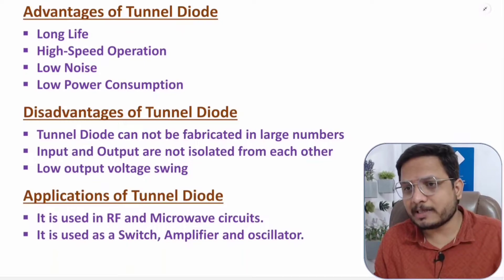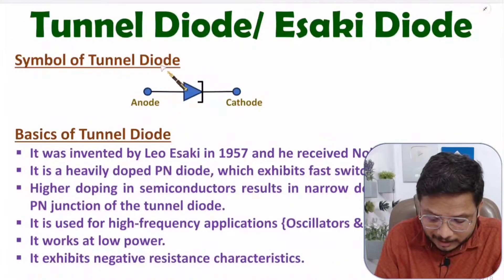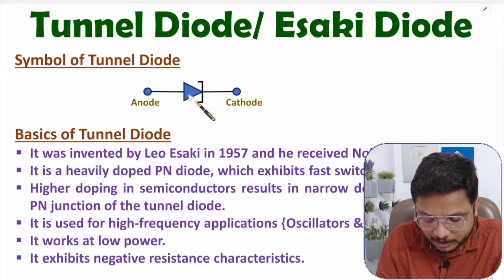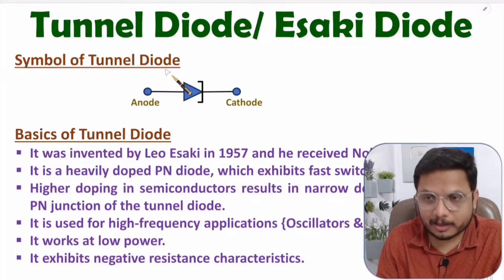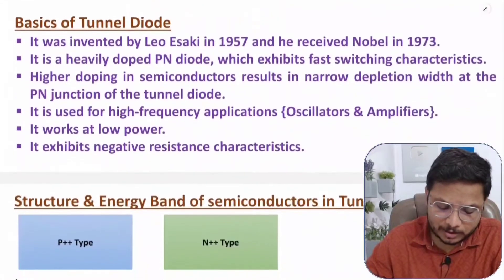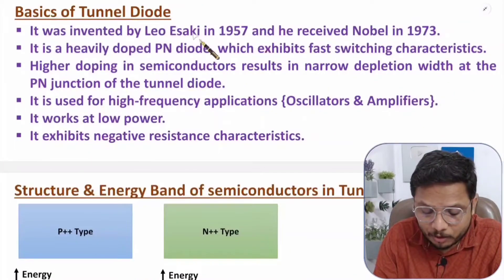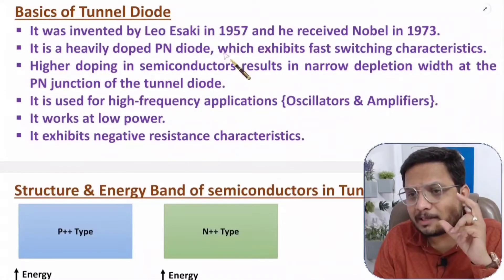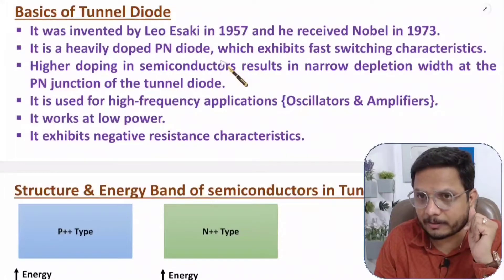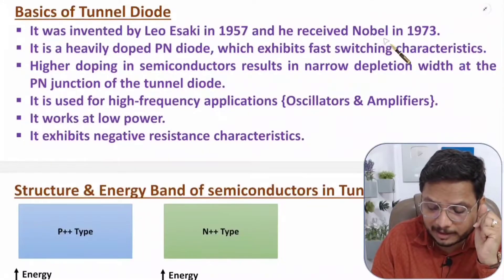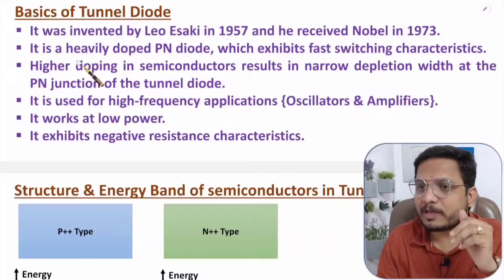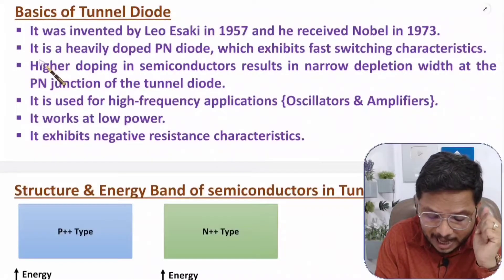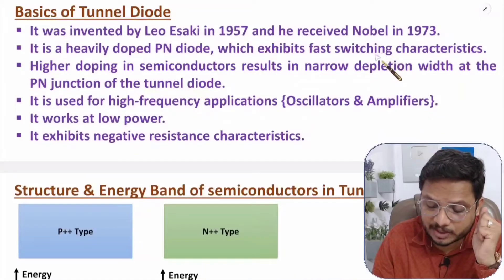The symbol of tunnel diode is similar to a normal pn junction diode symbol — the only difference is at the cathode side, instead of a straight line the line is bent. Tunnel diode was invented by Leo Esaki in 1957, and based on his name this diode is also referred to as the Esaki diode. He received the Nobel Prize in 1973 based on his invention.